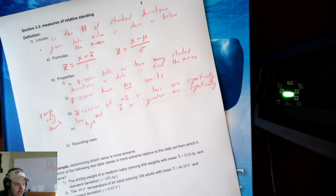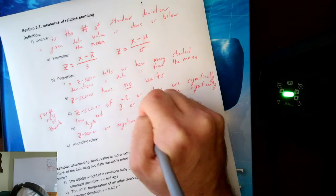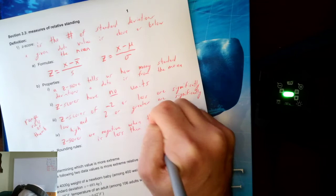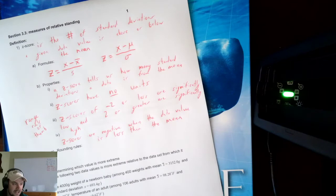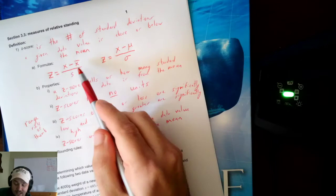Fourth, z-scores are negative when the data value is less than the mean. That should make sense: data value minus mean — if this number is smaller than the mean, the result is negative. That's how subtraction works. If the second number is larger, we get negative values.